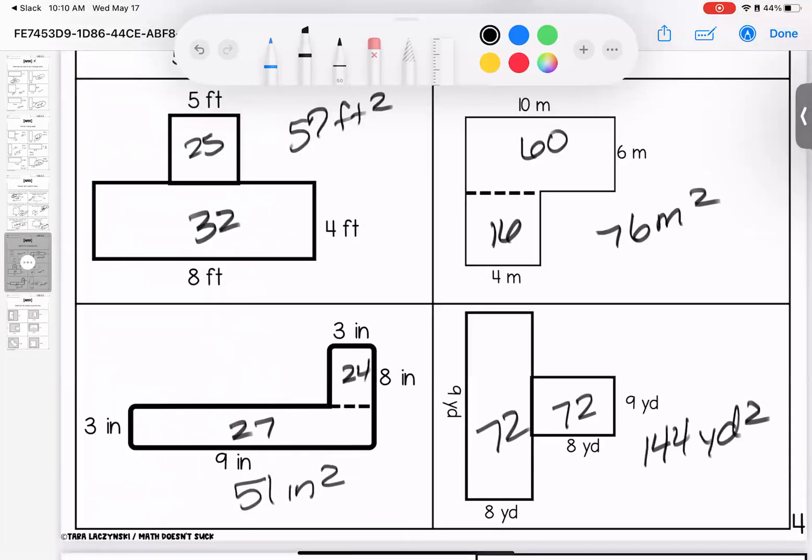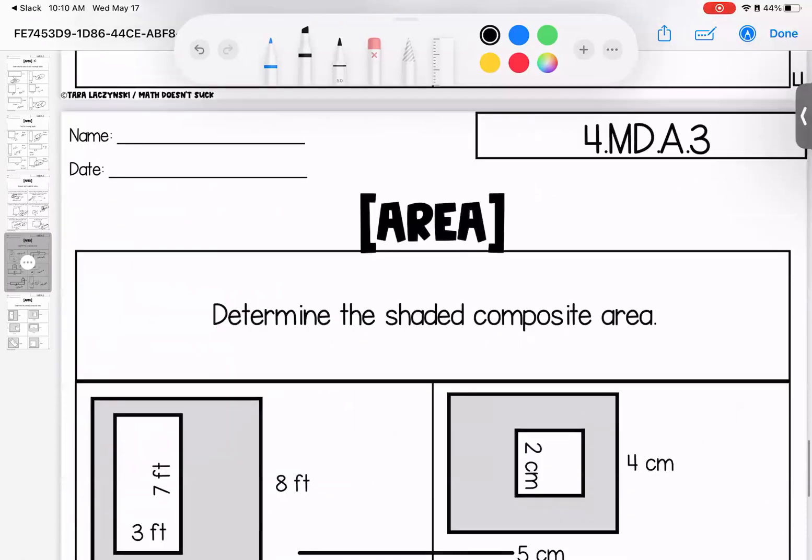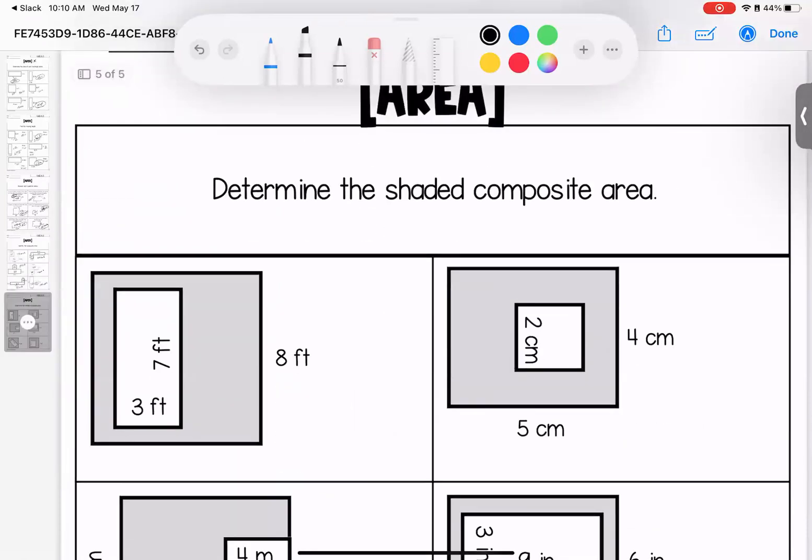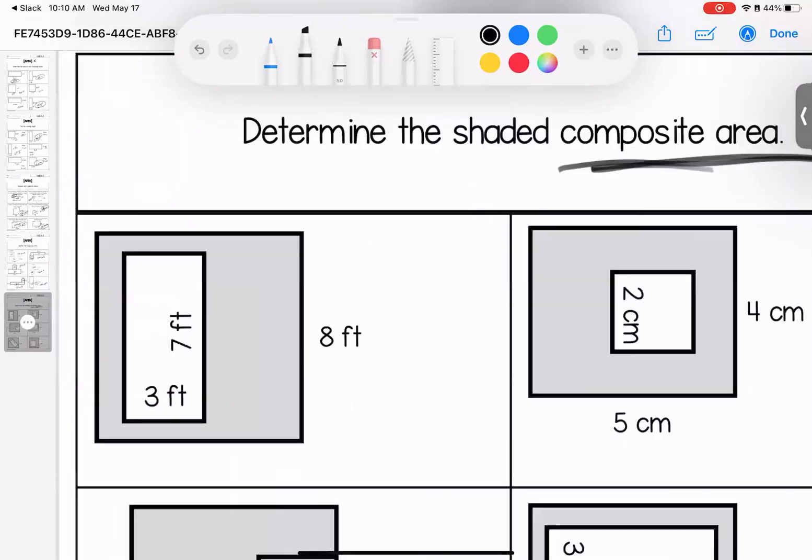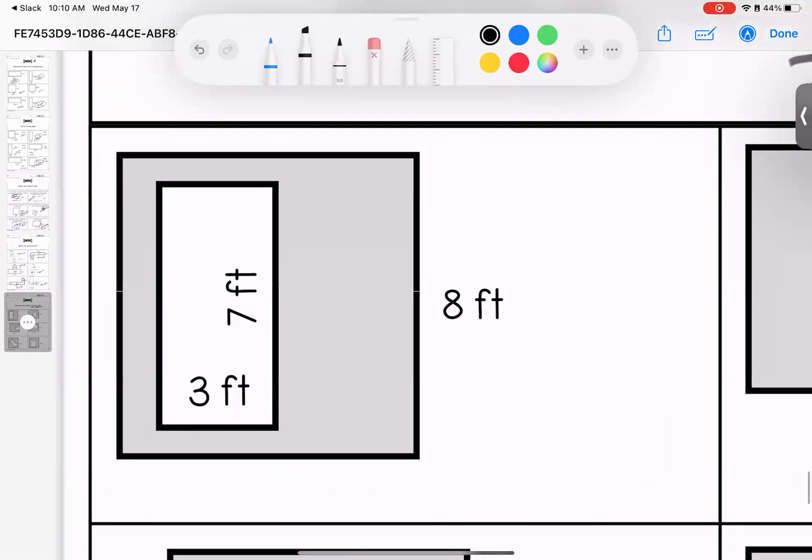This time you have to determine the shaded area, so you need to figure out how much is shaded, how much is not, and subtract them. So 8 and 8 is 64, 7 and 3 is 21. Subtracting, because this inside piece does not count, total shaded is 43 feet.